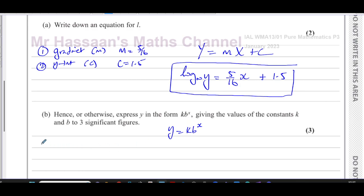We have log to the base a of b equals c. This is like a general rule for logarithms. If I want to write this in exponent form, I think of the base as the base and the result as the power. So that's a to the power of c equals b. That's how this changes from log form to exponent form. You take the base. In this case, we started off with log to the base 10 of y equals 5 over 16 x plus 1.5.